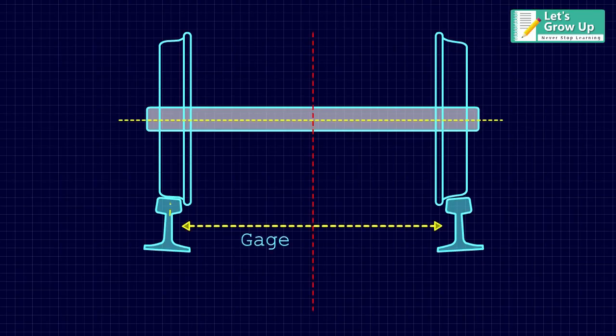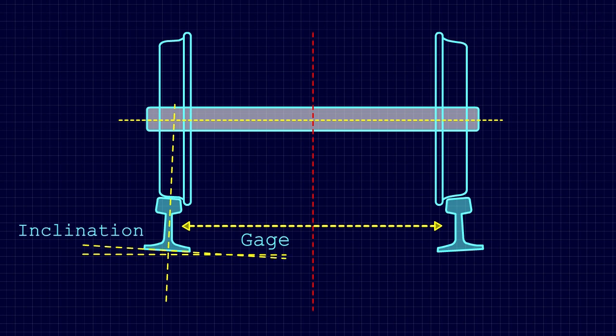The rails are tilted or inclined slightly inward towards the center of the track. The angle of inclination is different. For example, 1:20 is used within the UK, whereas 1:40 is used in the USA.